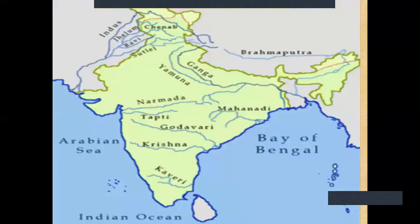In the map, Brahmaputra, Ganga, Yamuna, and Indus are perennial rivers, while Mahanadi, Narmada, Krishna, and Kaveri are non-perennial rivers. You will paste a river map of India in your social studies copies and mention these eight rivers on the river map.